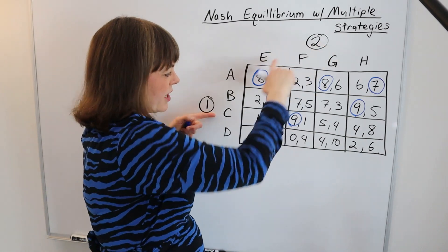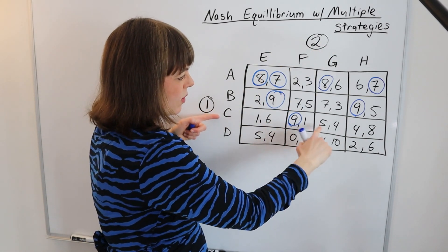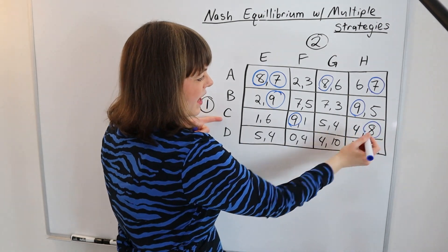If player one goes C, then player two between the six, the one, the four, and the eight, would prefer the eight.